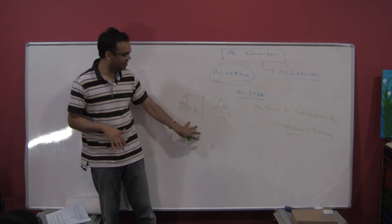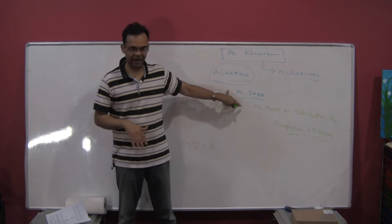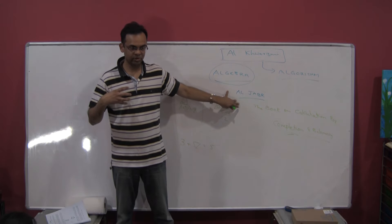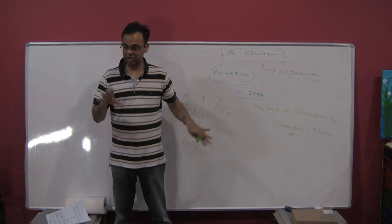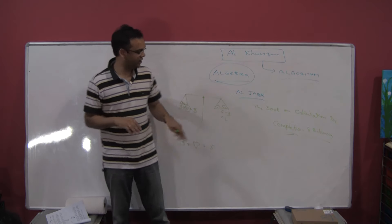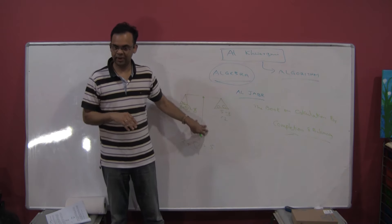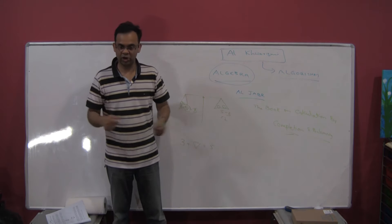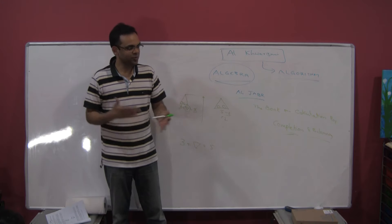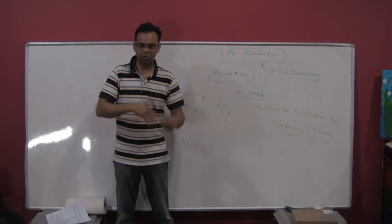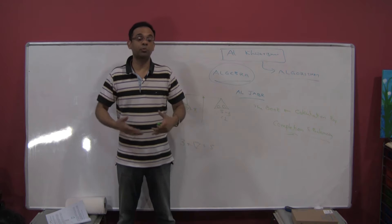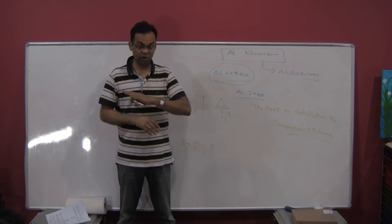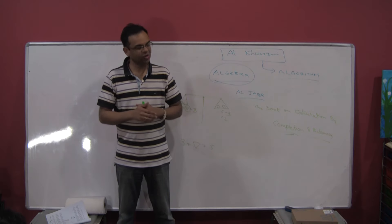So when the concept of algebra moved from the Indian and Arab world to Europe, all Europeans were following Greek geometry. But they loved this concept, because with algebra you can solve a lot more complex problems much faster than in geometry. People started translating more books and understanding more, and they also developed more complex algebra on top of what Arabs had done.